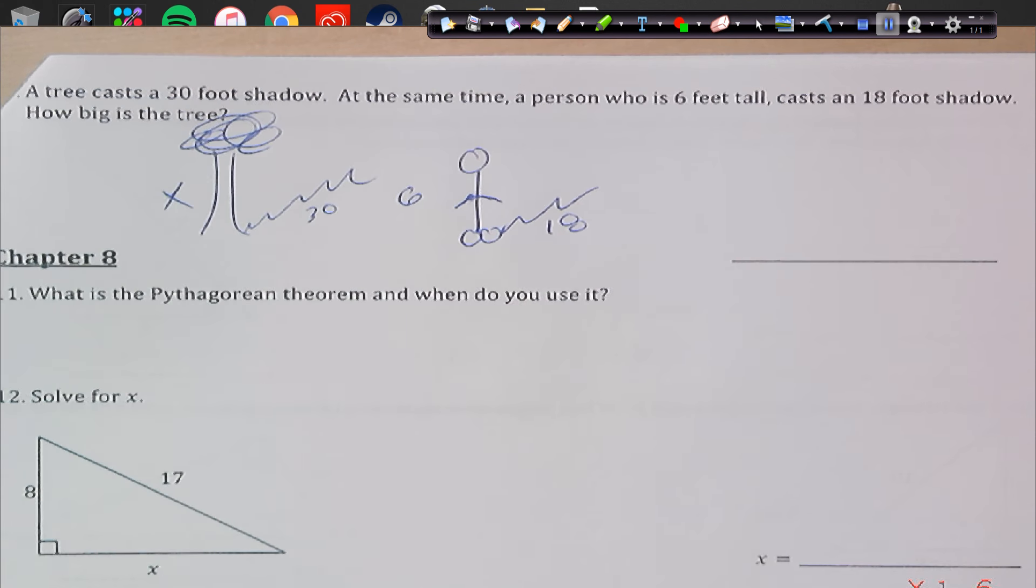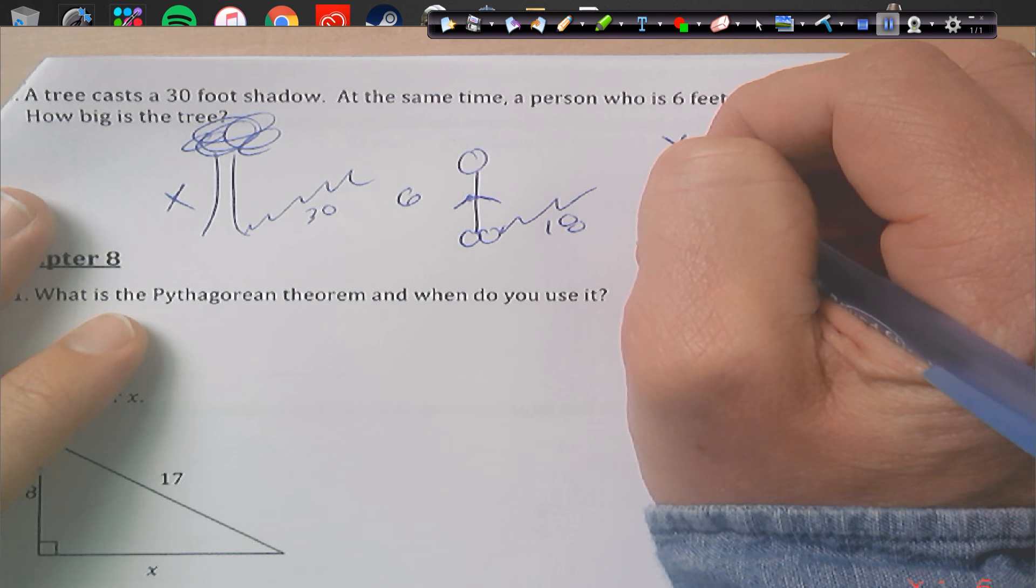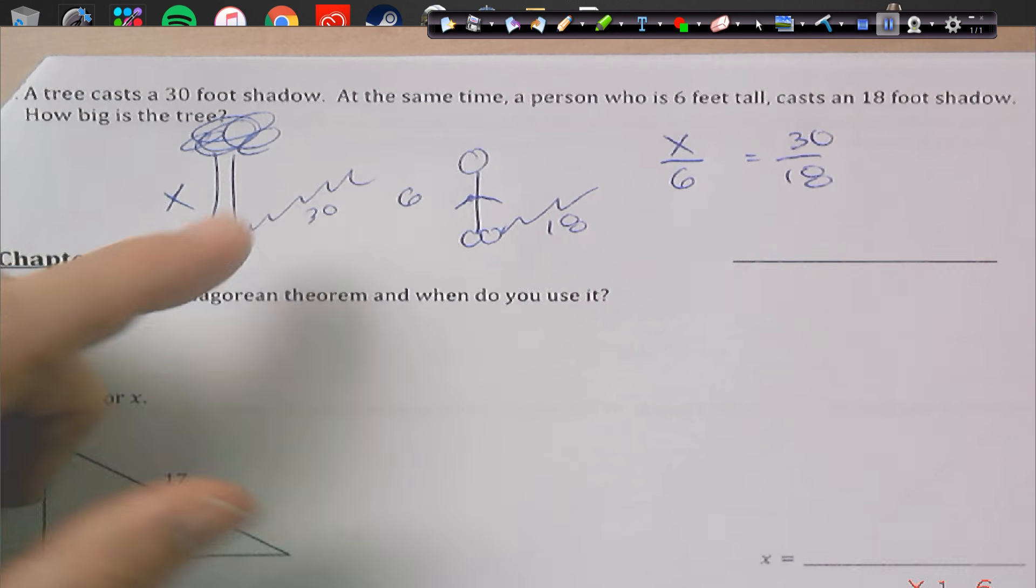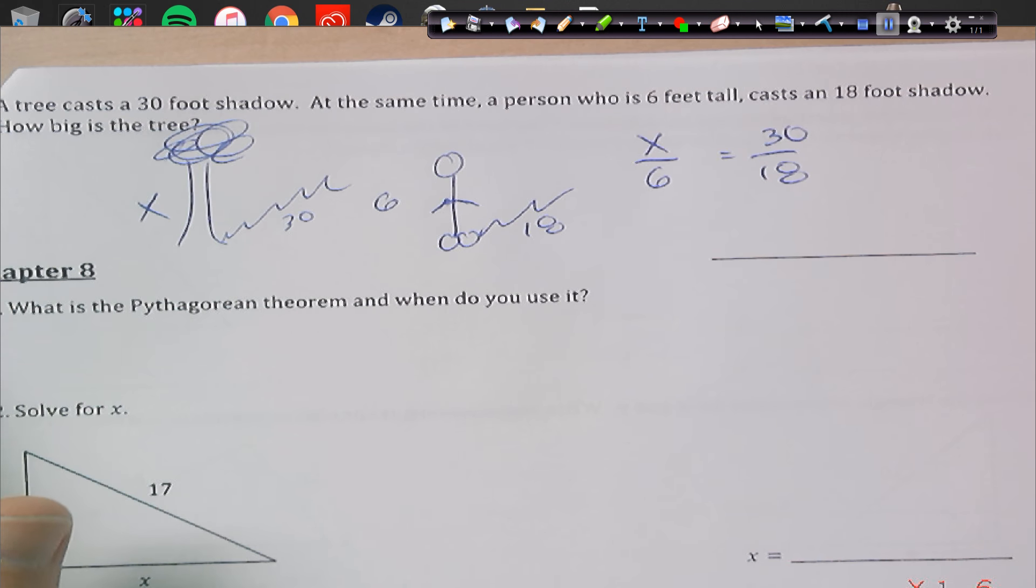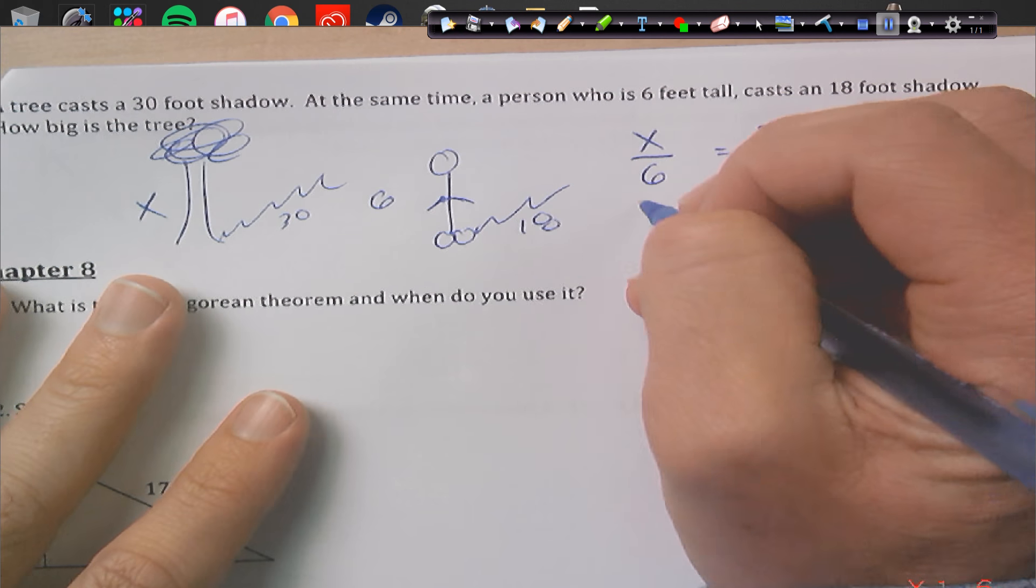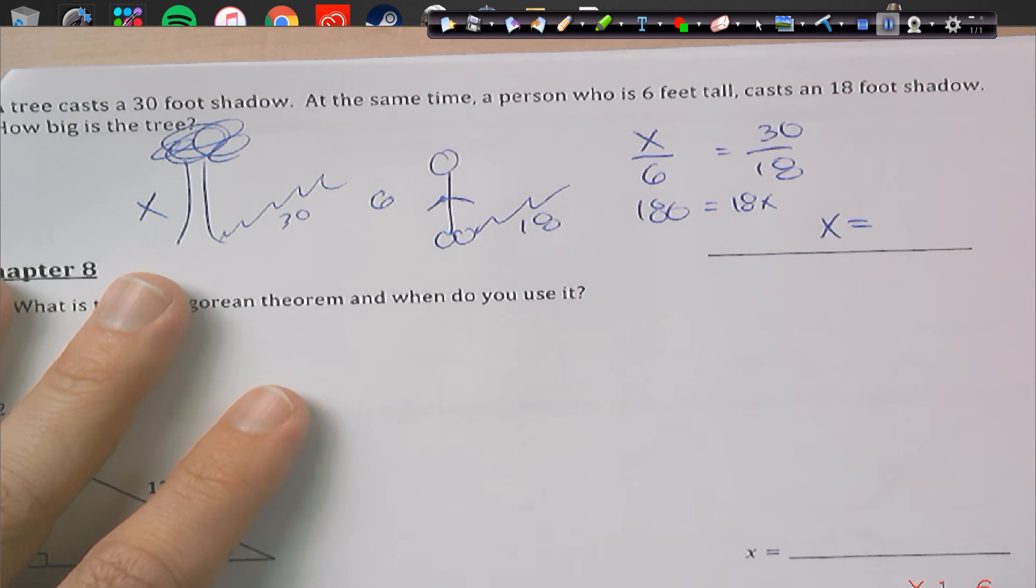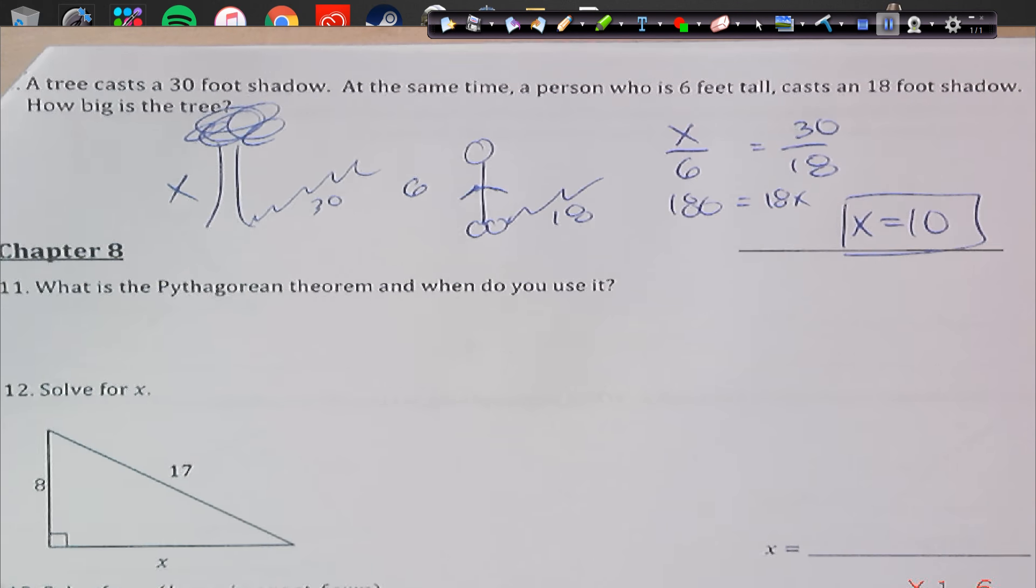So what's this? So we can use, since the sun's at the same time, they're going to use a congruent angle. So what we can do is I can use proportions. So x over 6, x to 6, should equal 30 to 18. And I can use my proportions here. 6 times 30 is 180. And that equals 18x, which means x is going to equal 10.